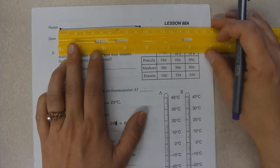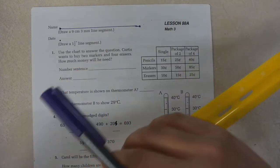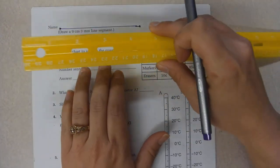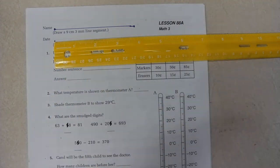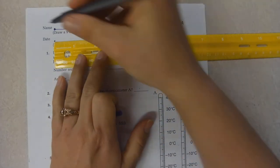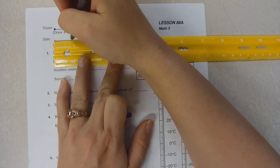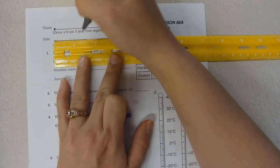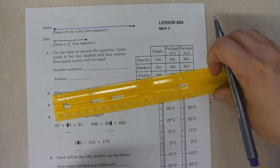The next one asks to draw a 1½ inch line segment. So you start at 0, and you draw a line that is 1½, past the 1 halfway between the 1 and the 2. Now a line segment has 2 endpoints, and that's important to know.